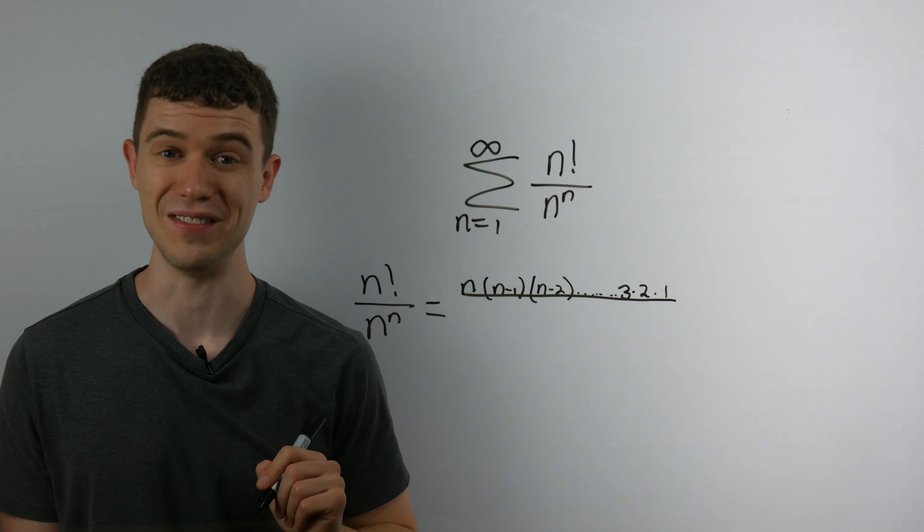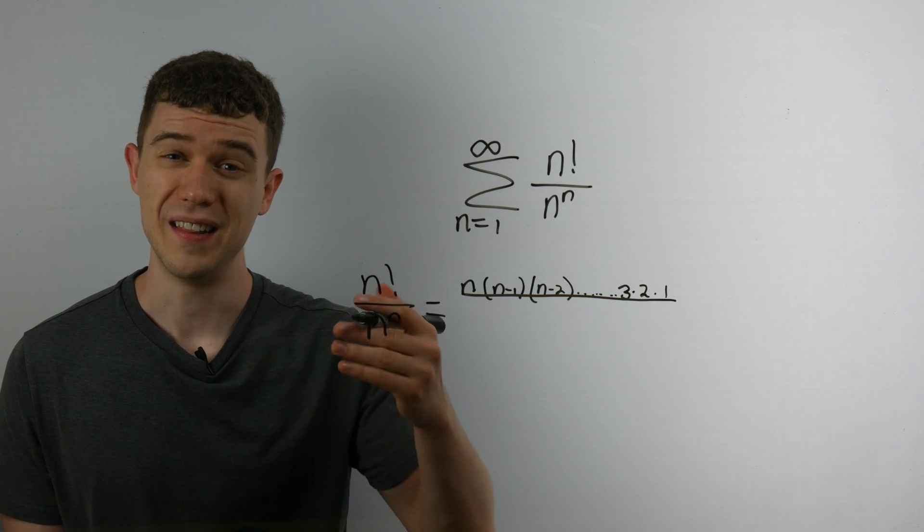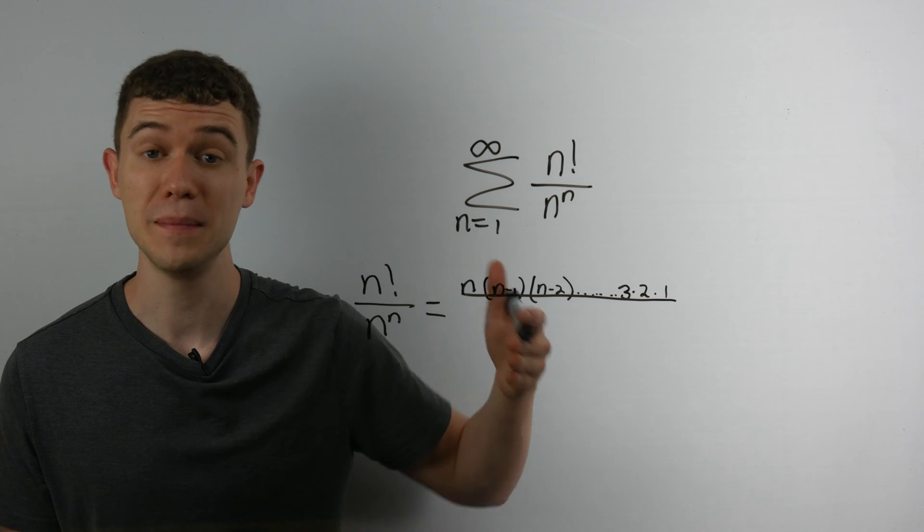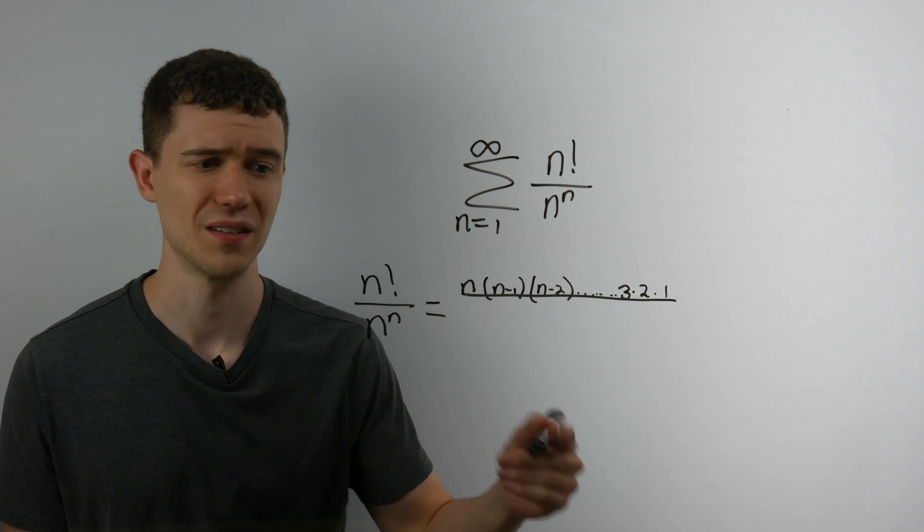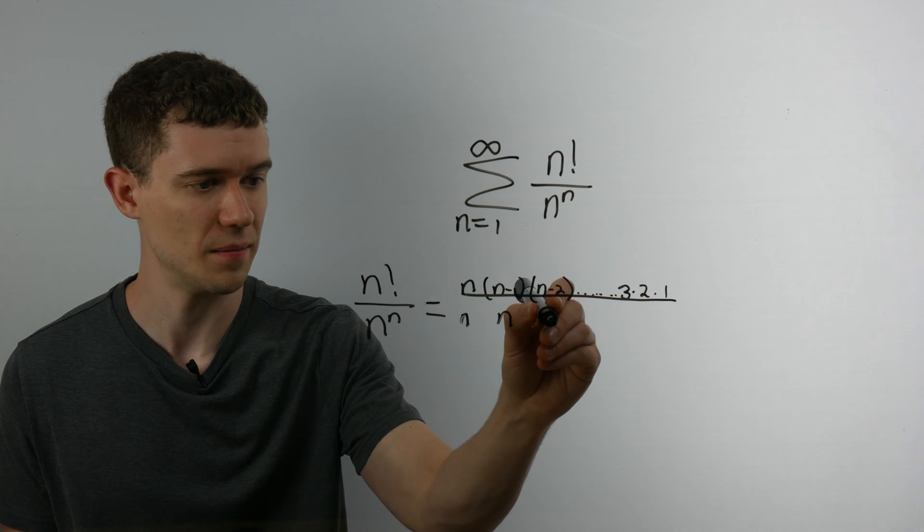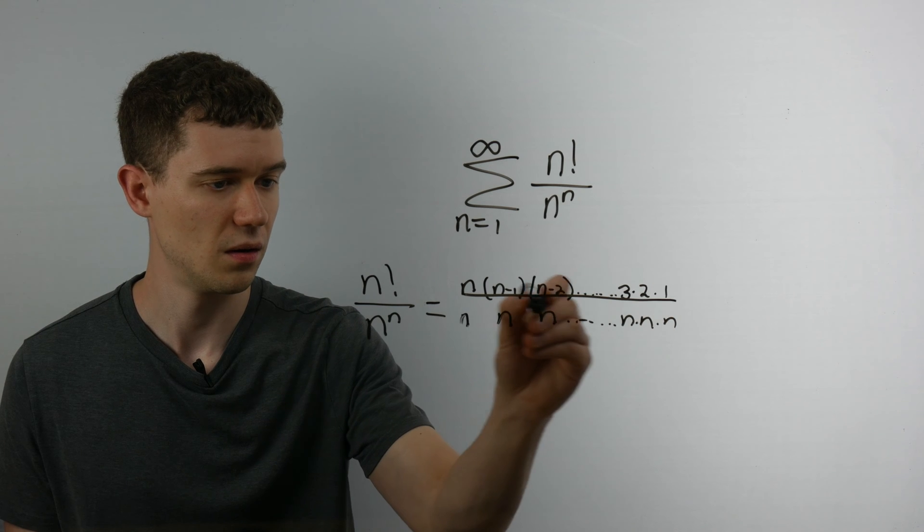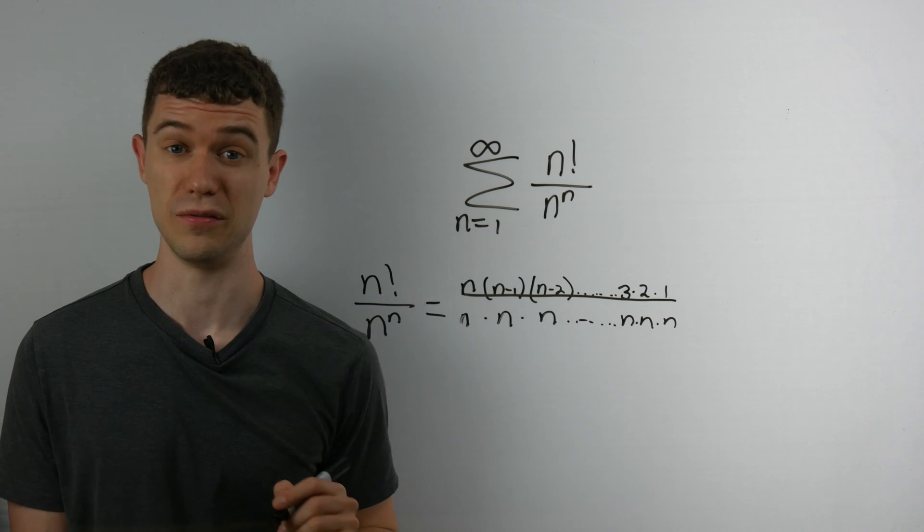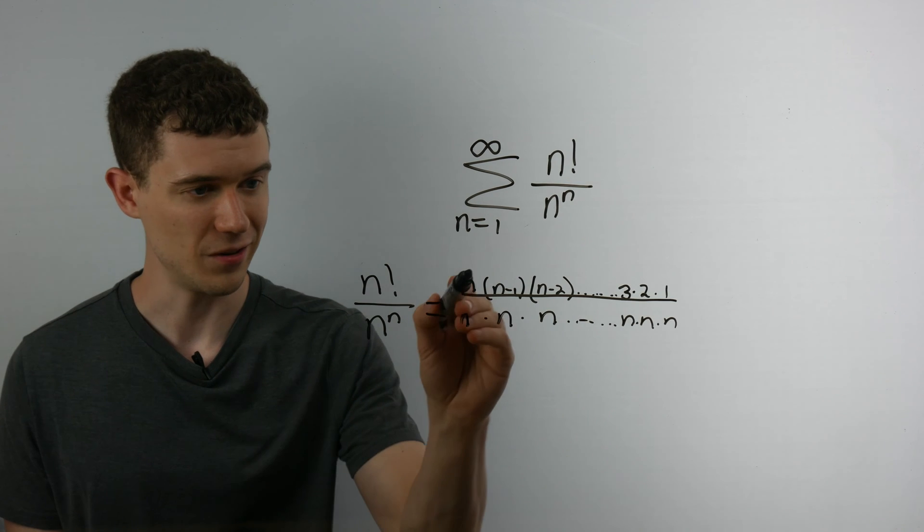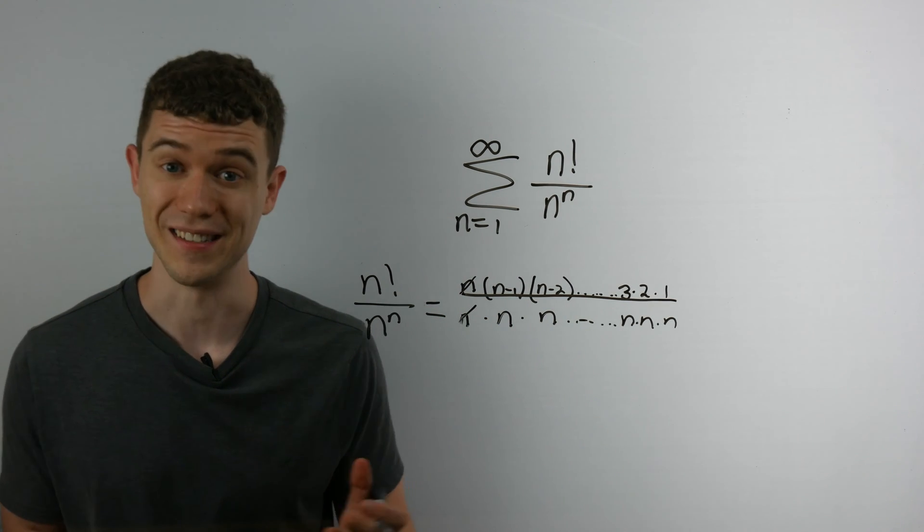And there are n of these. n to the n? Well, that means n times itself n times. So this is actually n times n times n all the way down. And there are n of them here. Well, right off the bat, you can see n over n, this first, well, they'll cancel. That's nice.